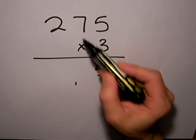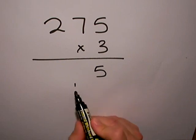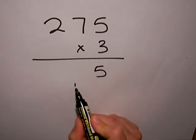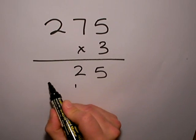Then I do 3 times 7, which is 21, plus the 1 that I've got to carry here, so that makes 22. 2 down, 2 to carry.